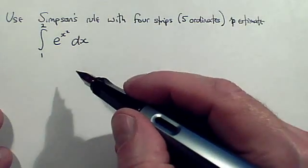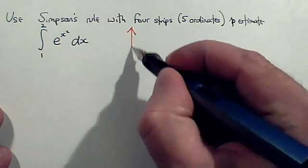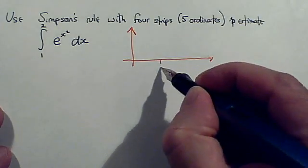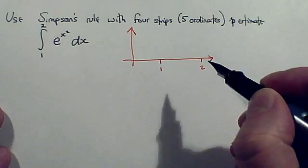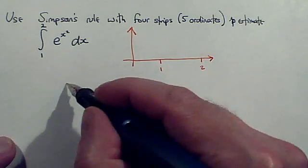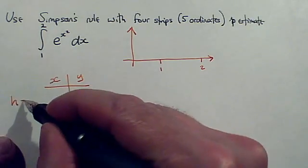The first thing you do for any numerical integration question is draw a quick sketch. Now, it doesn't matter if you don't know what the graph looks like, any old graph between the values of 1 and 2 will do. The purpose of the sketch is to be absolutely clear what x values you need in the table and what the width of the strip is going to be. And we call the width of the strip h.